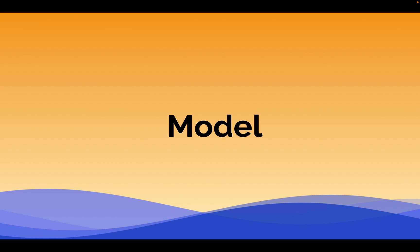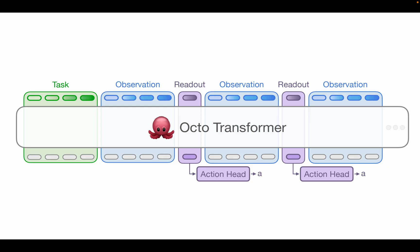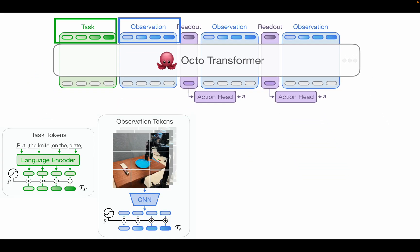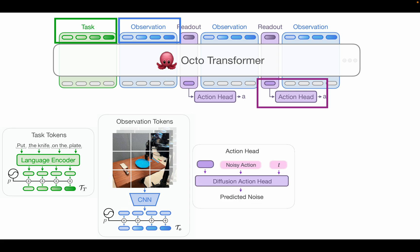So I'd like to tell you about Octo, our open source generalist robot policy, how we trained it, how you can use it, and some lessons we learned along the way. The core idea in Octo is to take all of these diverse robot datasets and turn them into a sequence of tokens to train a transformer on. Tasks and observations get converted via small input adapters into sequences of tokens, which get processed by a transformer, and embeddings of the transformer are decoded into robotic actions by a small action head.